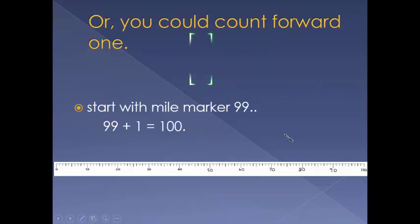Or you could count forward 1. If we start with mile marker 99, the next one is 100. 99 plus 1 is 100.